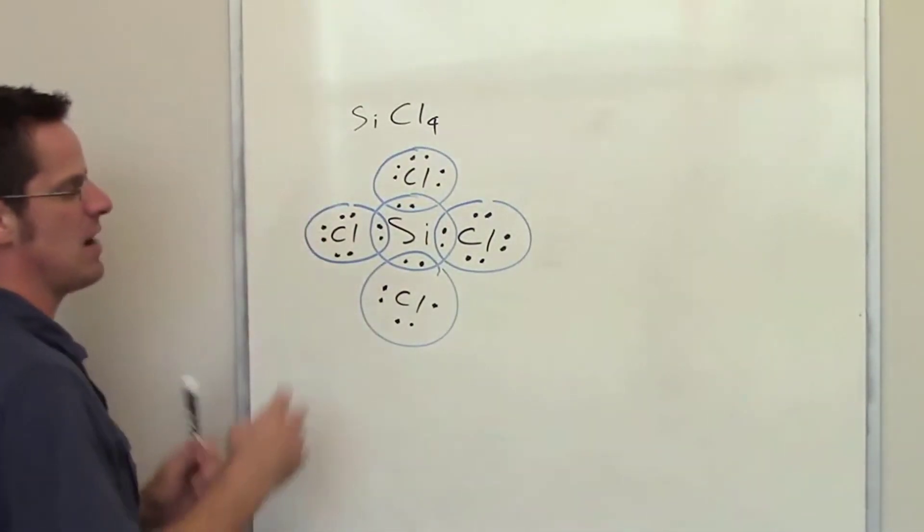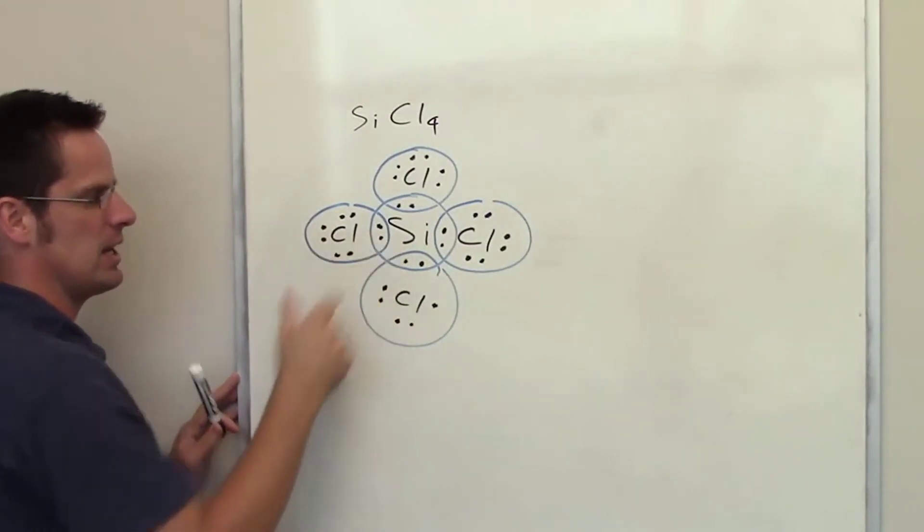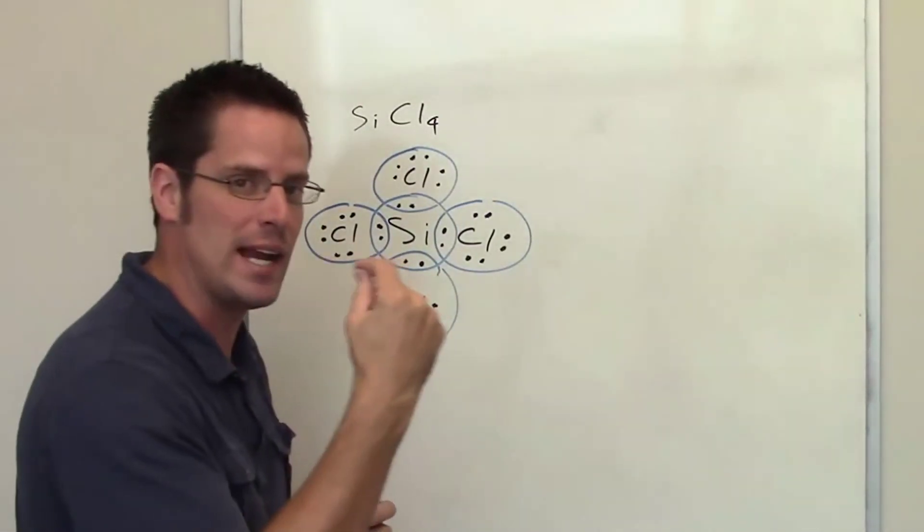What you have to do now is everywhere there's a bond, that is two electrons that are being shared by a silicon and a chlorine, we're going to turn that into a straight line.